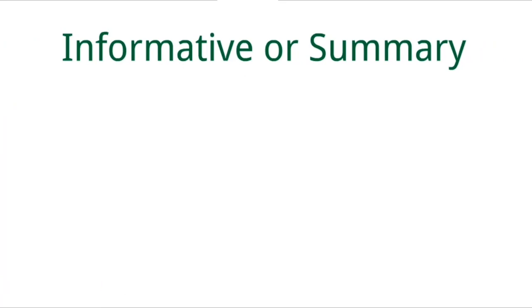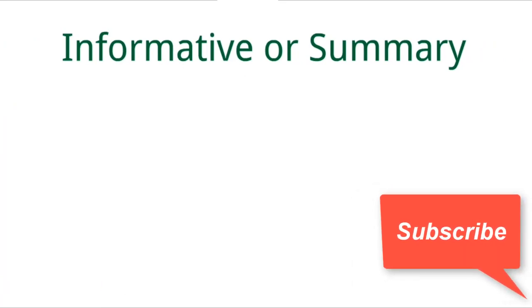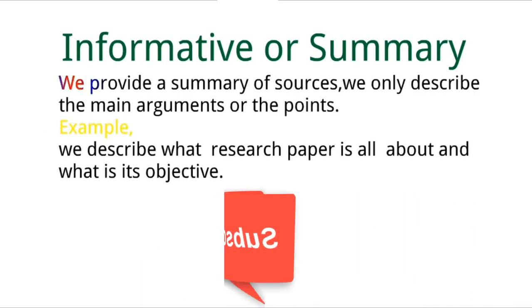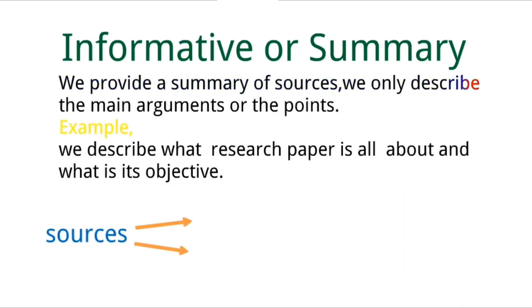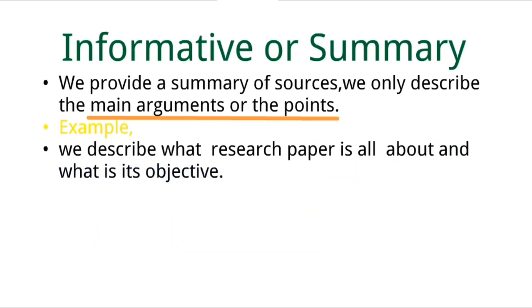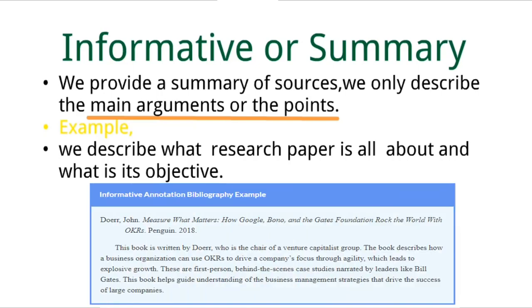The second style is informative or summary annotation. In this type we provide a summary of the source, describing only the main arguments or points — what the research paper is about, what its objective is, and how it fits into our list. An example is mentioned on screen.